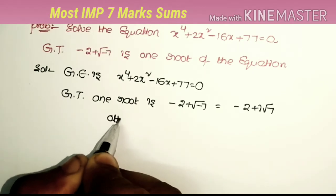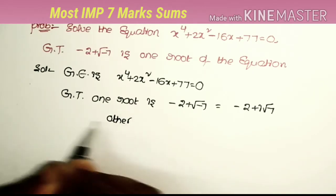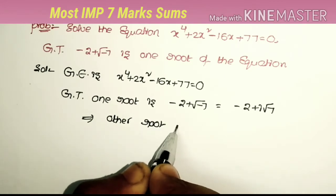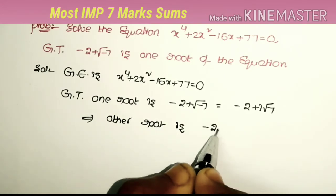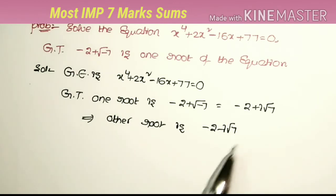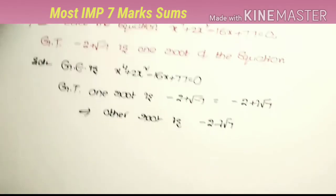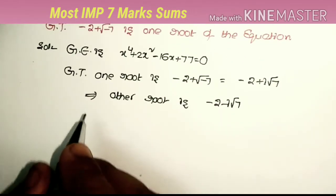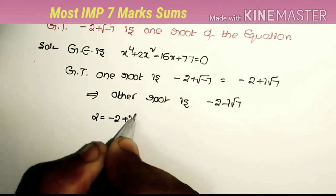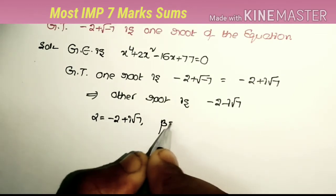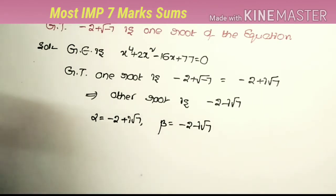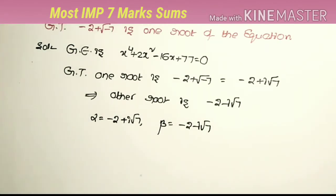The other root is the conjugate of the given root, which is -2 - i√7. We take alpha = -2 + i√7 and beta = -2 - i√7.